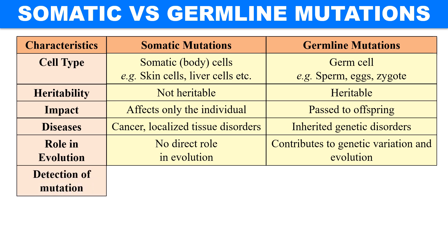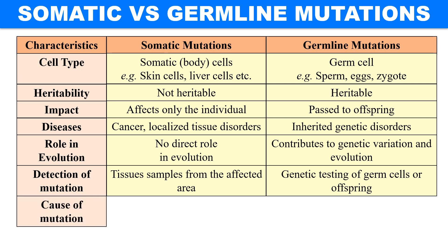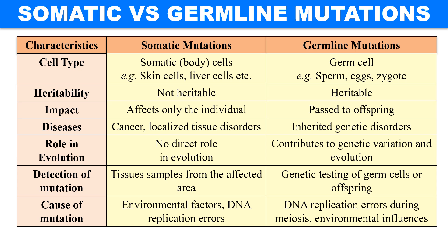Next, the detection of mutations. In the case of somatic mutations, detection is done by simply taking a sample from the affected area, while in the case of germline mutations we perform genetic testing of the egg, germ cells, or offspring. Regarding causes, somatic mutations may be caused by environmental factors or DNA replication errors. Similarly for germline mutations, the factors are also the same — DNA replication errors during meiosis or environmental influences like mutagenic elements or chemicals.